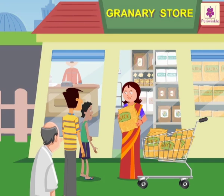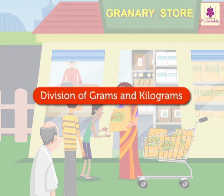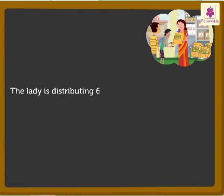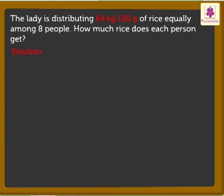Look, we are back at the granary. Today we will distribute some grains among these poor people and also learn division of grams and kilograms. The lady is distributing 64 kilograms 120 grams of rice equally among 8 people. How much rice does each person get? So let's divide 64 kilograms 120 grams by 8 to get the answer.